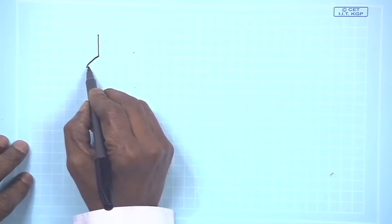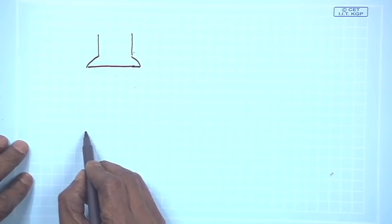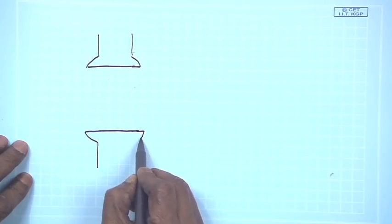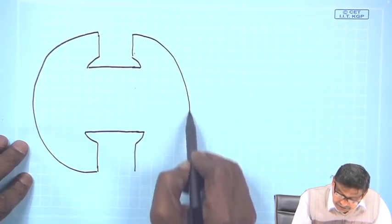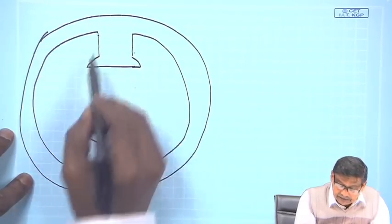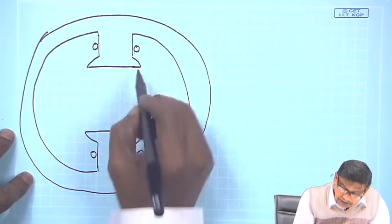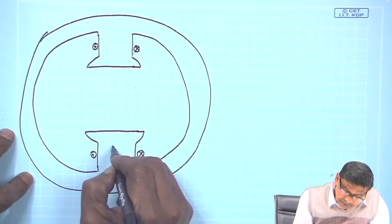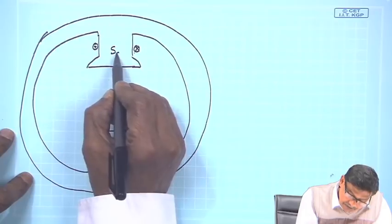I will draw it in a slightly nicer way. Every rotating machine has some stator and rotor. This is the stator iron, which is cylindrical, and there may be coils wrapped around the poles. If you pass current like this, this becomes a north pole of the stator because lines of force will come out, and this will become the south pole of the stator.